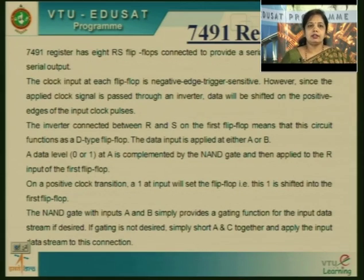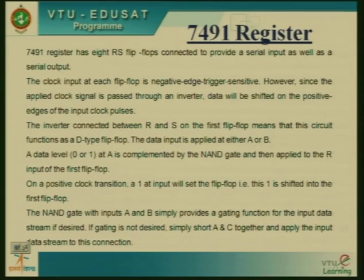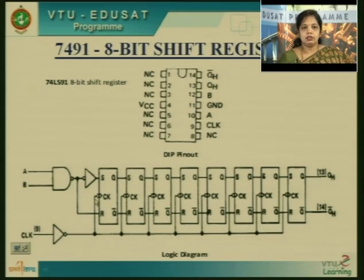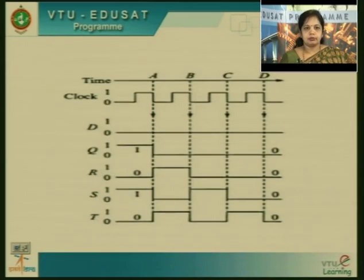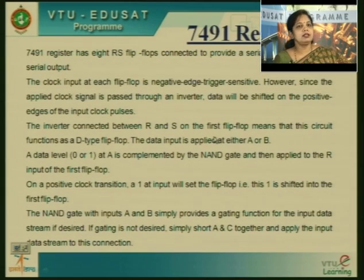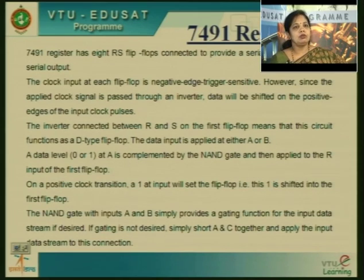The 7491 register has 8 RS flip-flops providing serial input and serial output. The clock input is negative edge sensitive, but the applied clock signal passes through an inverter, so data actually shifts on the positive edge of the input clock pulse — the bubble and inverter cancel each other out. The inverter connected between R and S on the first flip-flop makes the circuit function as a D flip-flop. Data level is complemented by the NAND gate — whatever input is given, either 0 or 1 is fed to the flip-flop.